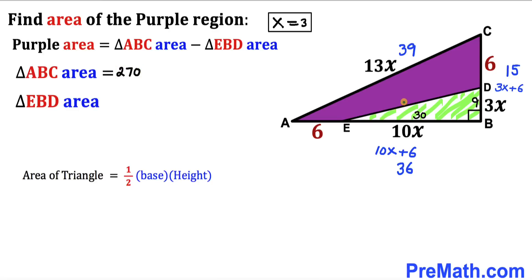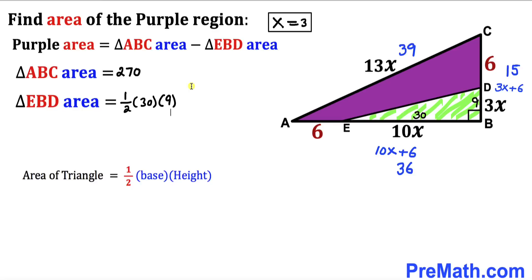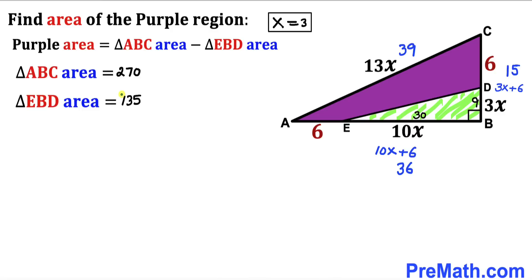Now let's calculate the area of the smaller triangle EBD. Using the same area formula, the base is 30 and the height is 9. So the area of triangle EBD is one-half times 30 times 9, which gives us 135 square units.